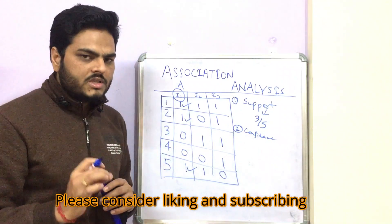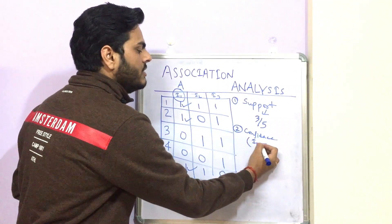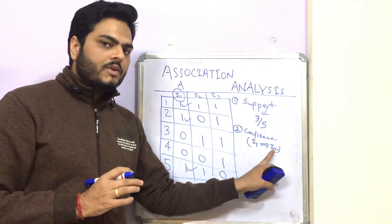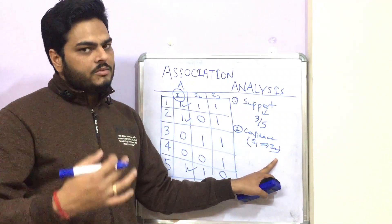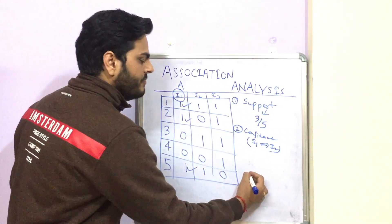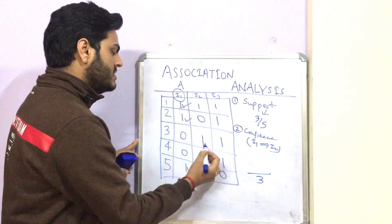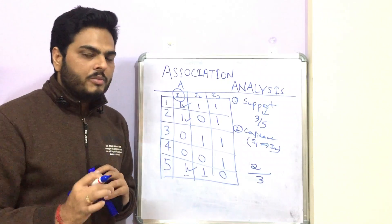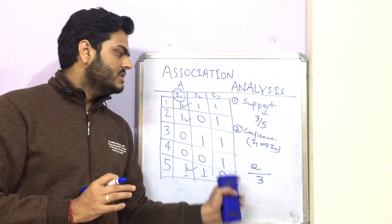The second metric is known as confidence, and confidence always involves two or more items together. For example, what is the confidence of i1 given i2 — meaning if somebody buys item i1, what is the confidence that they will also buy item i2? The total transactions of i1, which is three, goes in the denominator. The combination of i1 plus i2 appears twice, so confidence is two divided by three.